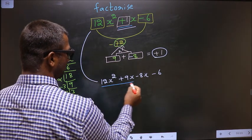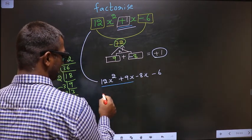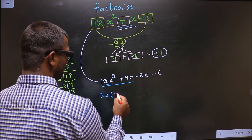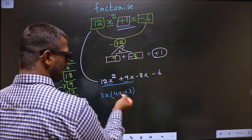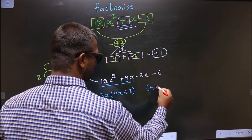What can be taken common from these two terms is 3x. So here I get 4x and here I get +3. Whatever I have got here, here also I should get the same thing.